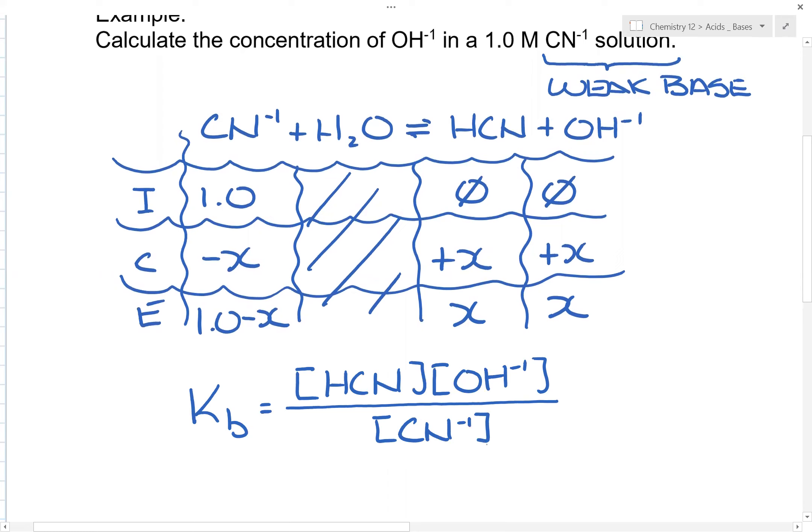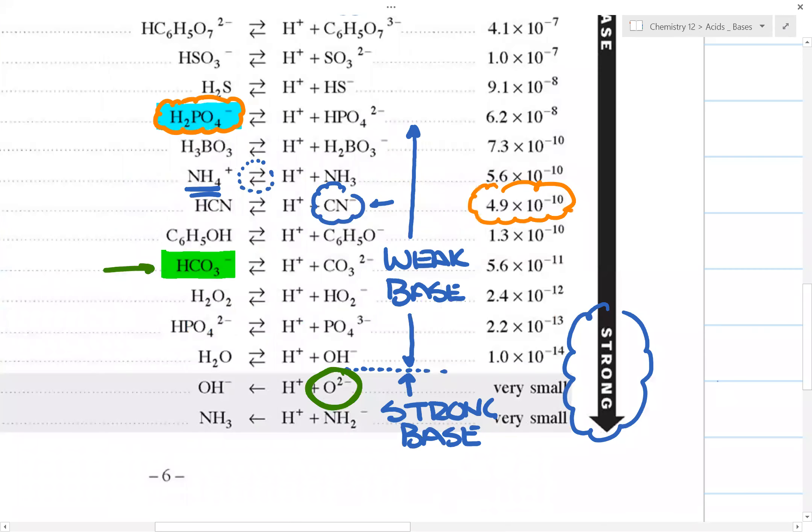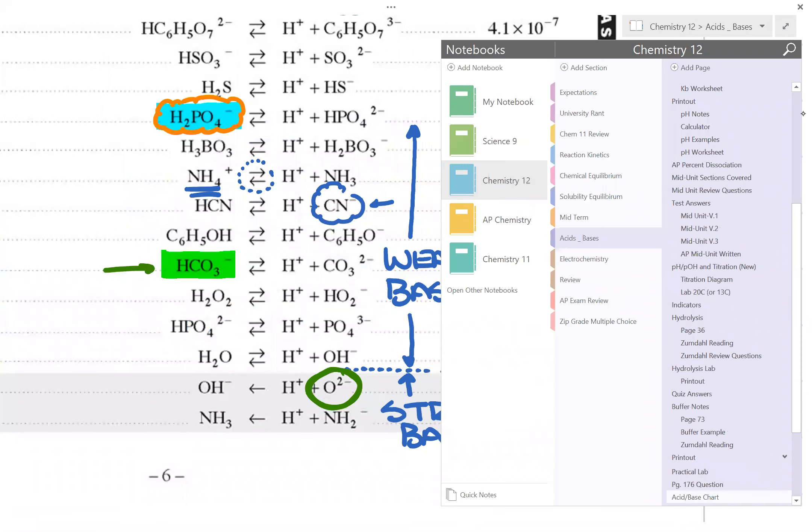Now, you might say, Mr. Chan, there's no Kb. But what you can do is you can determine the Kb by looking at the Ka value here. So you have 4.9 times 10 to the negative 10, that's the Ka value.